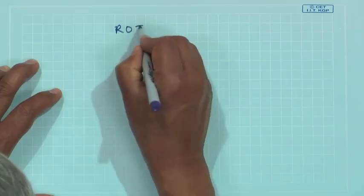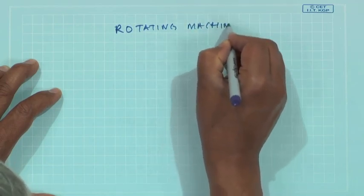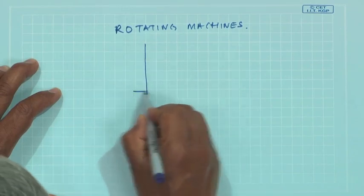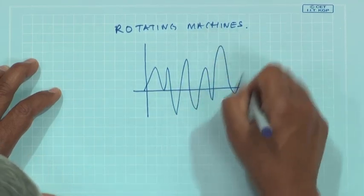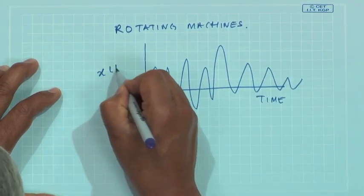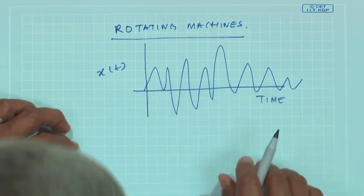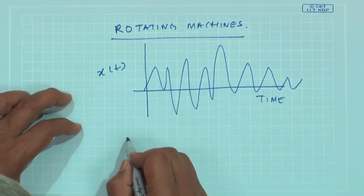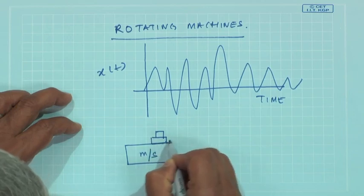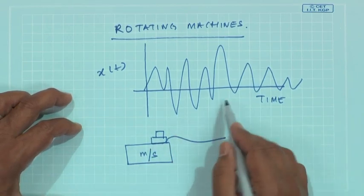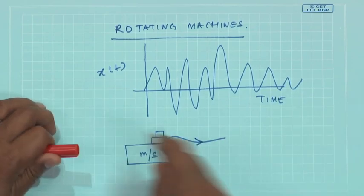In rotating machines or machines which are in operation, the signals in general are time varying. This is a typical signal which comes out of a machine operating over time. If in such a machine I put a transducer, this transducer is also going to measure this signal, but the transducer itself is a mechanical system.